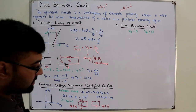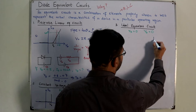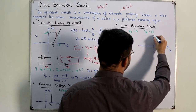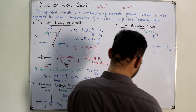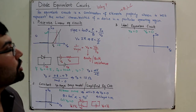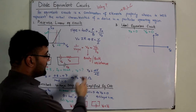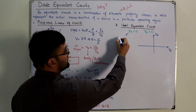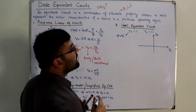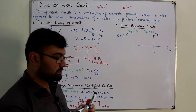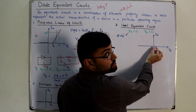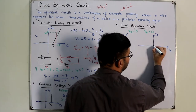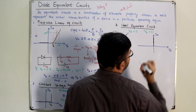With Rd = 0 and barrier potential = 0, what sort of graph will you have? If the resistance is zero, it would be a completely linear curve — theta is 90 degrees. And if the barrier potential is zero, it will not need any voltage to turn on, so it will turn on right at V = 0. This is your curve.